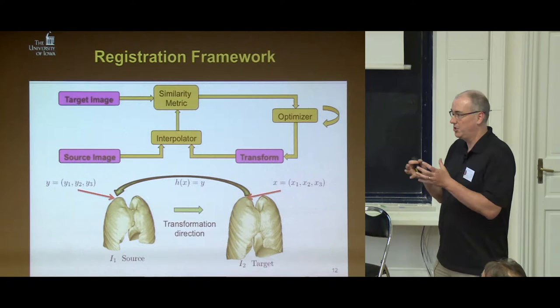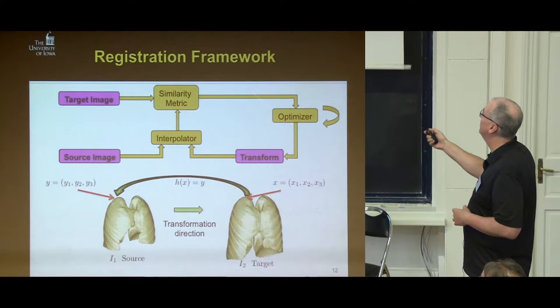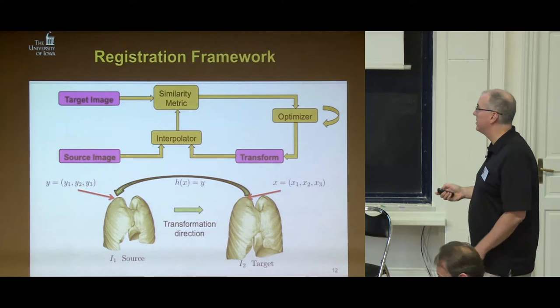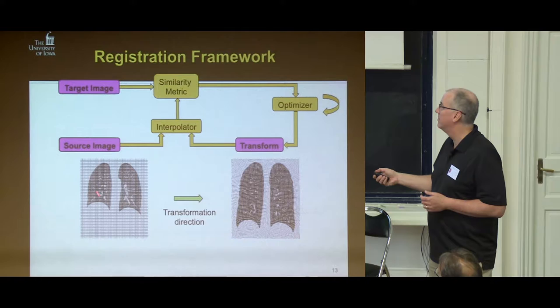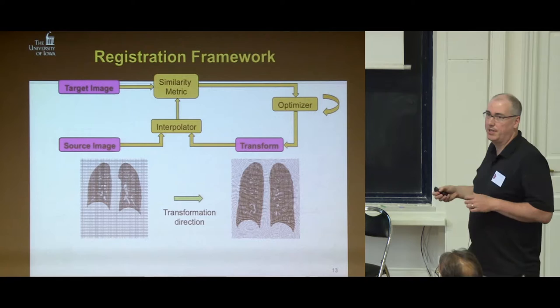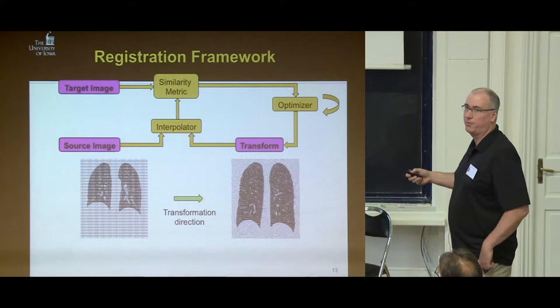We do this iteratively, going around the loop. There's some similarity metric that tells us how similar the two shapes are — whether shape, intensity, and so on — and we keep iterating until the source image looks like the original one and we have nice properties on the transformation. The output of this process is a transformation, illustrated with a deformed grid. If we start with full inspiration, the lung is really small, and we want to map it to full expiration — so the lungs get bigger. It's a very difficult registration problem.